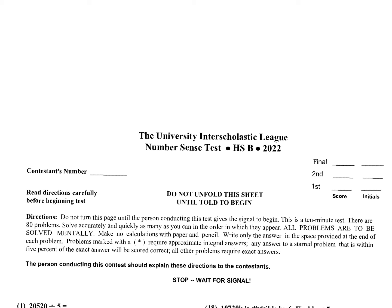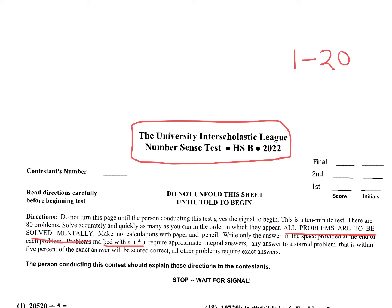Ready for some number sense? In this video, I'm going over a number sense test, Test B from 2022. This is mental mathematics — all problems are to be solved mentally. Make no calculations with paper and pencil. While I'm explaining these, I might write on the margins just for the explanation; you're not allowed to write on the margins, you can only write the answers. Problems marked with a star, which are multiples of 10, 20, 30, are approximate answers. In this video I will be doing problems one through 20, and if you hang around to the end, we'll have some bonus problems beyond 20. Make sure you hit the like button and subscribe if you want to see more videos like this.